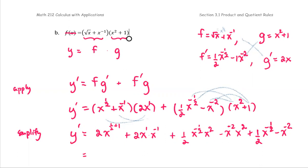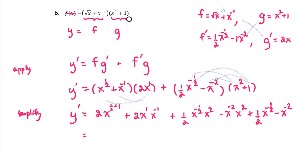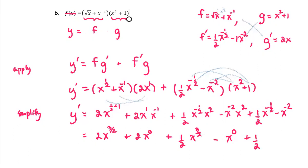We're going to clean up and simplify. When you add the powers as fractions, the first term becomes 2 times x to the power 3 over 2. The second term is 2 times x to the power 0. The next term is one half x to the power 3 over 2, minus x to the power 0. Then we have one half x to the negative one half, and the last term is negative x to the power negative second.